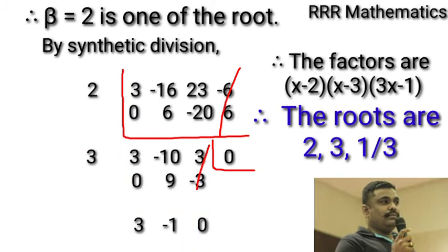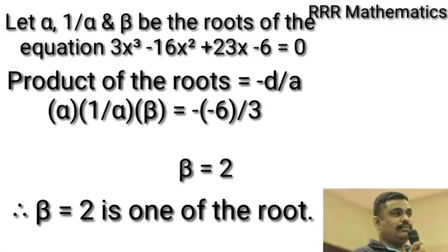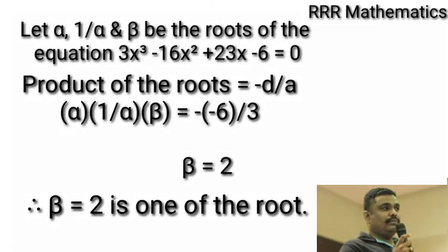Got it? Small review. In this case, we are assuming the roots are α, 1/α, and β. So, product of the roots gives 2, which is the value of β.